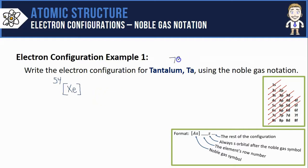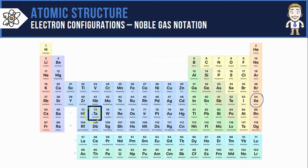But I still have some work to do because tantalum has 73 electrons and I've only accounted for 54 of them. My format tells me that following the noble gas symbol will always be an s orbital. I just have to tell which s by finding my element and seeing what row number it's in.